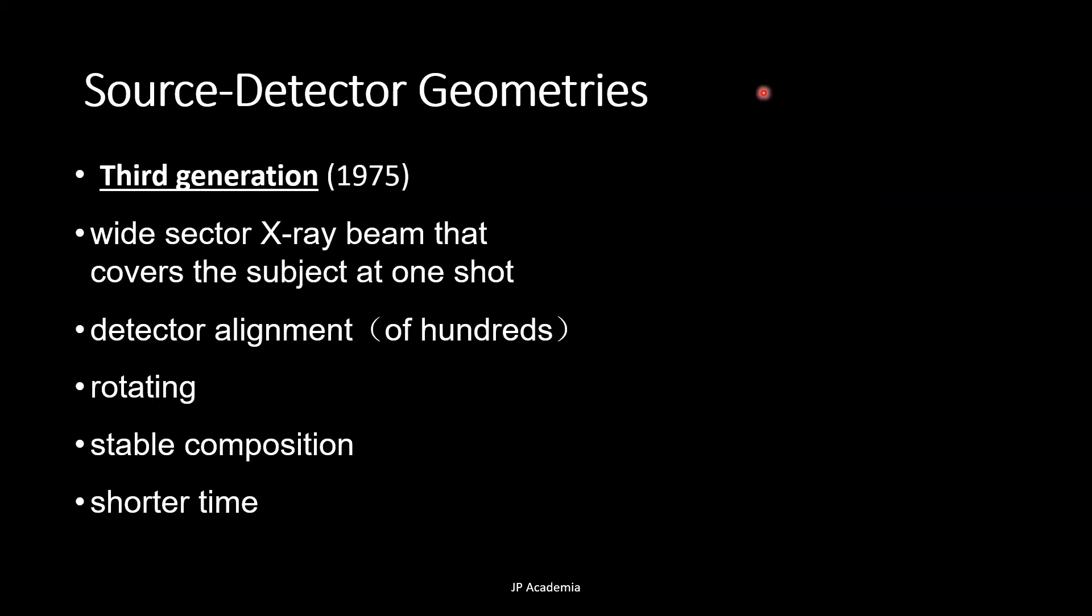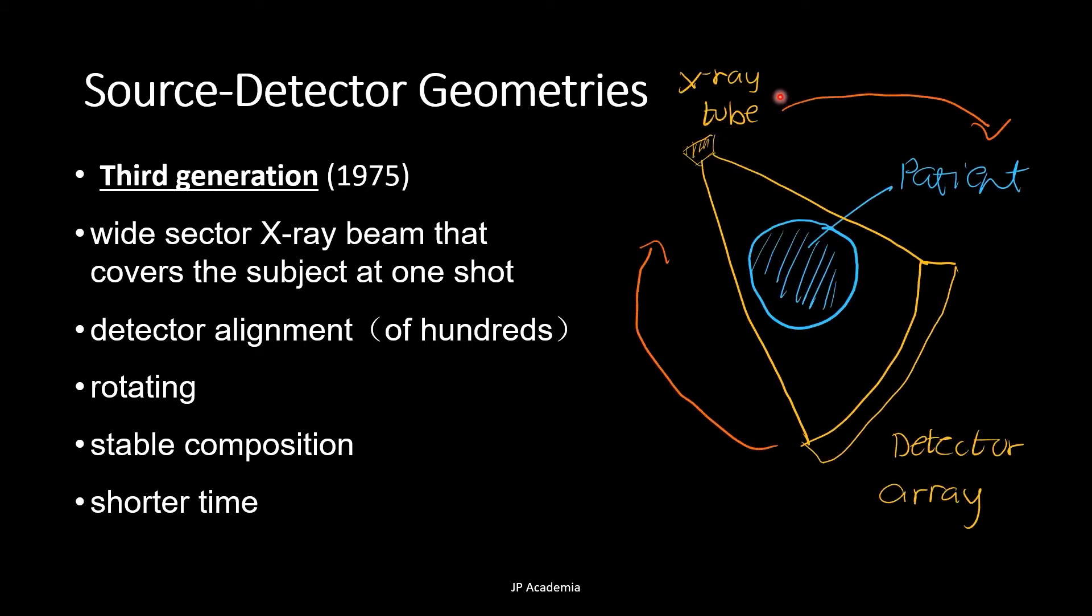Next, we have the third generation, as shown here in the drawing. We have the X-ray tube, we have the detector array, here's the patient, then the motion is mainly rotation. A wide range of fan beam of X-rays encompasses the entire object as shown, and thus it can scan continuously. Fan beam was enlarged to cover the whole field of view of about 50 centimeters. Inclined to produce artificial rings, so that's the disadvantage. And it has a need of highly accurate and stable detectors.